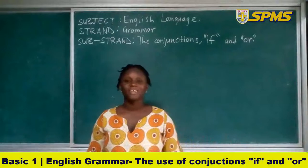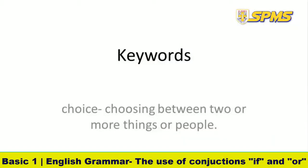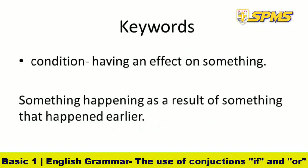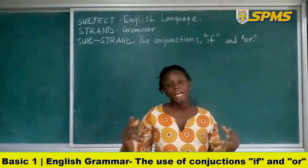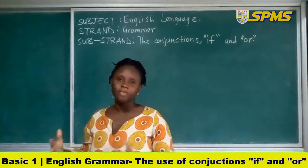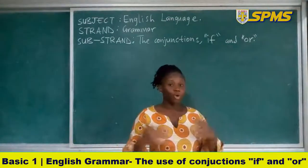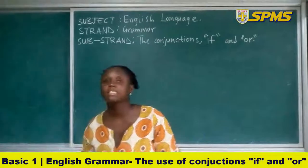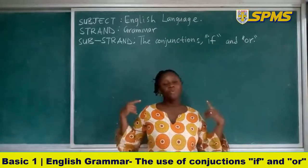In this lesson we'll look at two main keywords. The first keyword is 'choice' — choice means choosing between two or more things or people. The second keyword is 'condition' — condition means having an effect on something; in this context, condition means something happening as a result of something. For example: she passed her exams because she studied very hard.